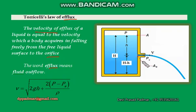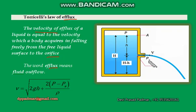Let the area of cross section of this orifice be considered as A-naught. This orifice is open to the atmosphere. Therefore, the pressure acting at this particular point is equal to atmospheric pressure, Pa. Over the free liquid surface, the pressure acting is let it be P.